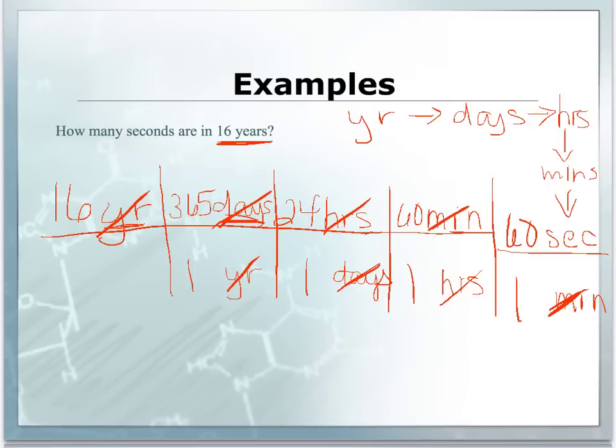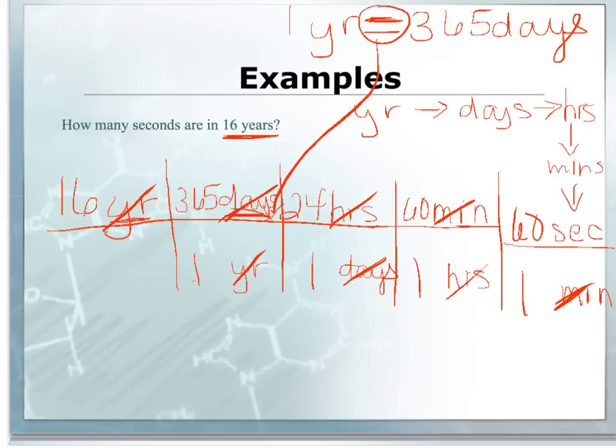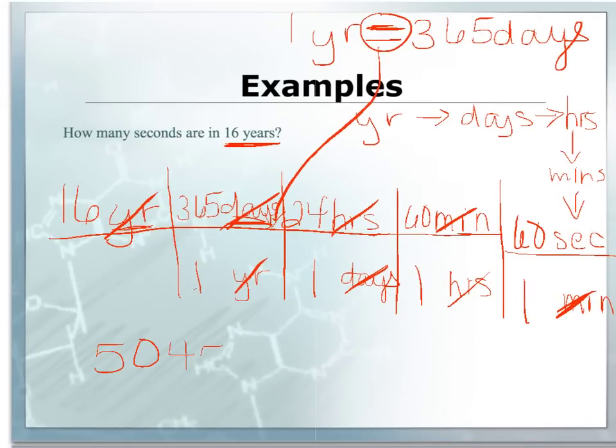So you see how our t-chart is. We're going to use our conversion factors and put them into fractions. One year equals 365 days. If you notice that most of our conversions will be written with equal sign, our equal sign can really be replaced with the fraction bar in our t-chart. Now that we have this all set up, we're going to multiply all of the numbers on the top and then go through and divide all the numbers on the bottom. Our answer comes out to be 504,576,000 seconds.